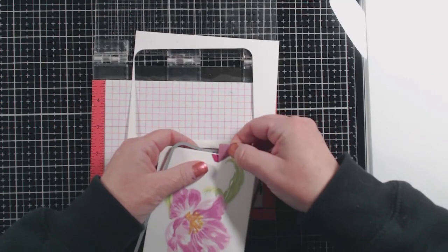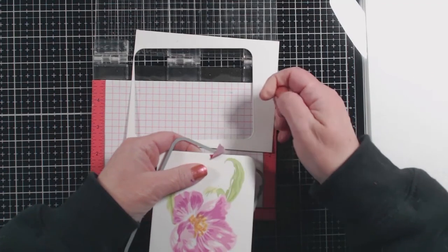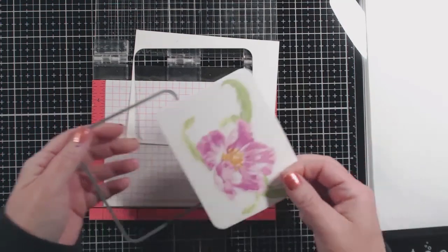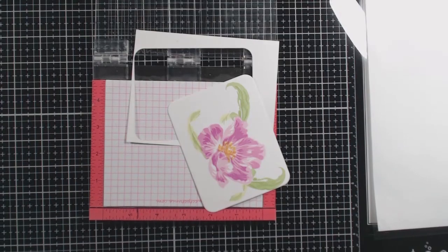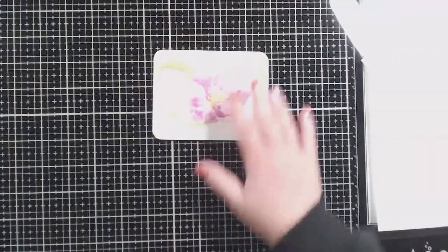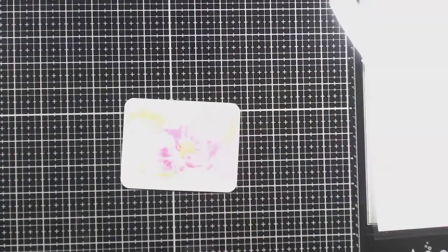Then I'm going to die cut a piece of black cardstock, Hero Arts black cardstock, using the same die set but with a slightly larger die so that it frames it. These are great dies, but they're not really proportionate to A2 cards and you'll see that when I put it on the final, but I just work with it. I like it either way.